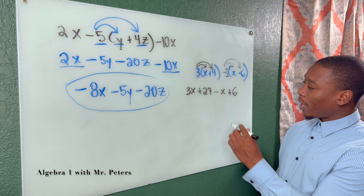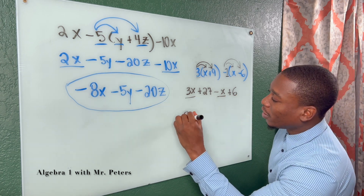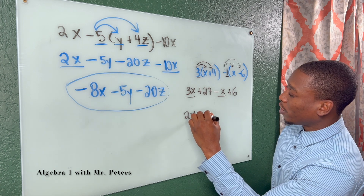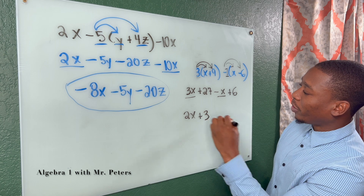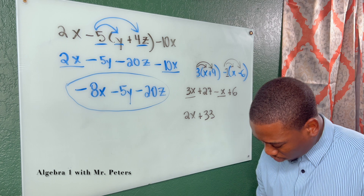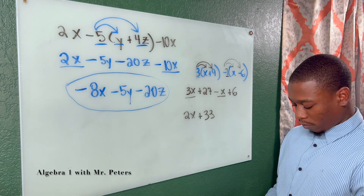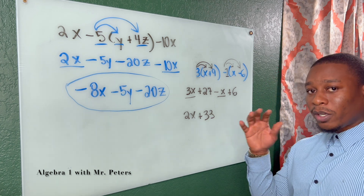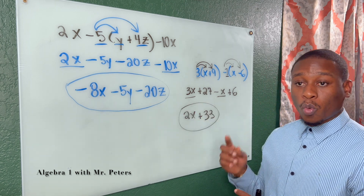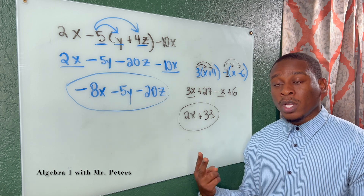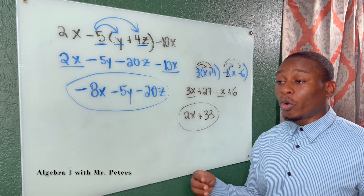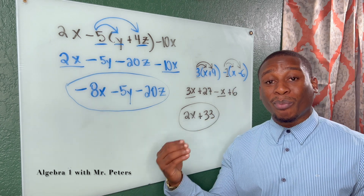Once we do that, we can add our like terms. So 3x minus x gives me 2x, and 27 plus 6 is 33. When we're talking about the distributive property, remember: one, we're talking about multiplication, and two, this applies when we have parentheses inside an equation, expression, or inequality.